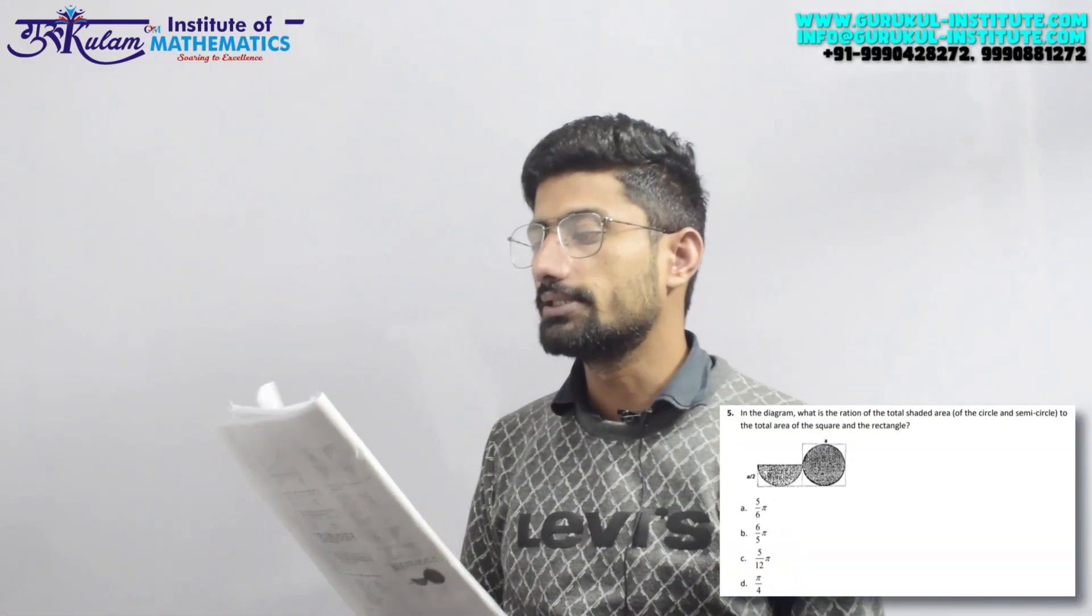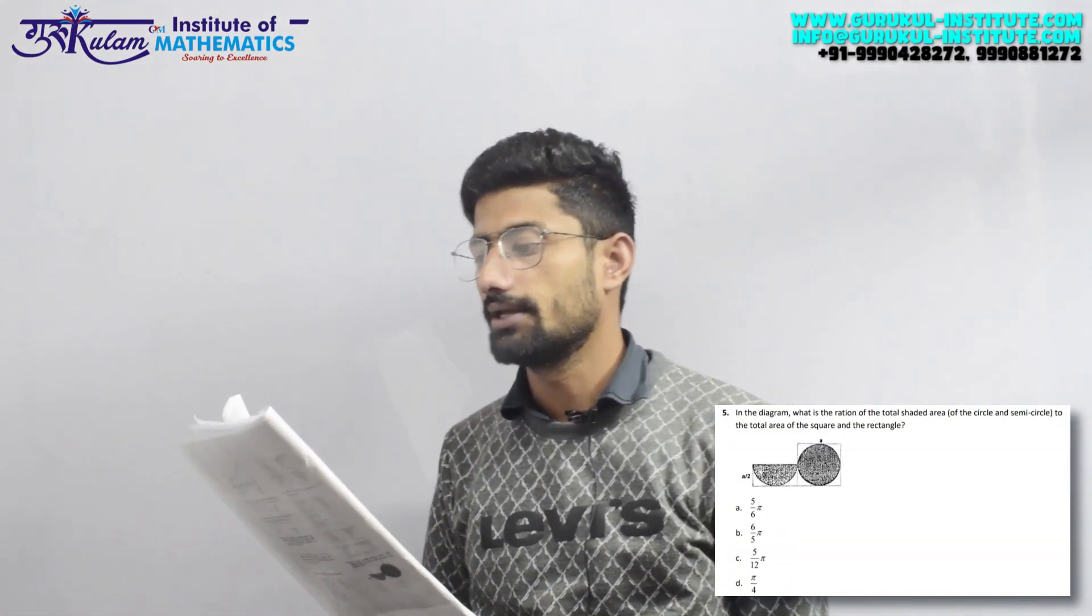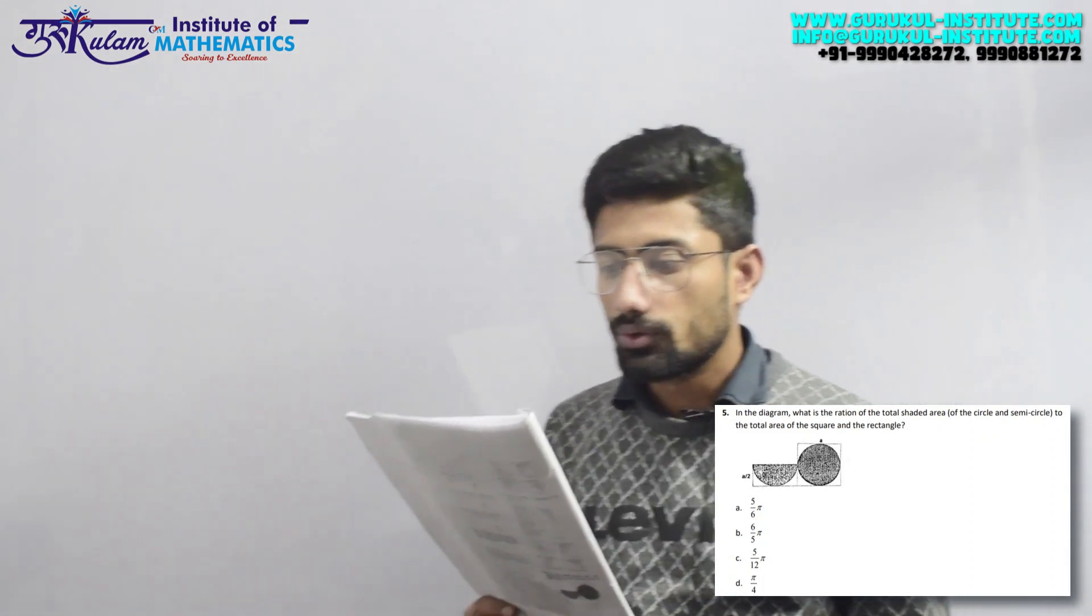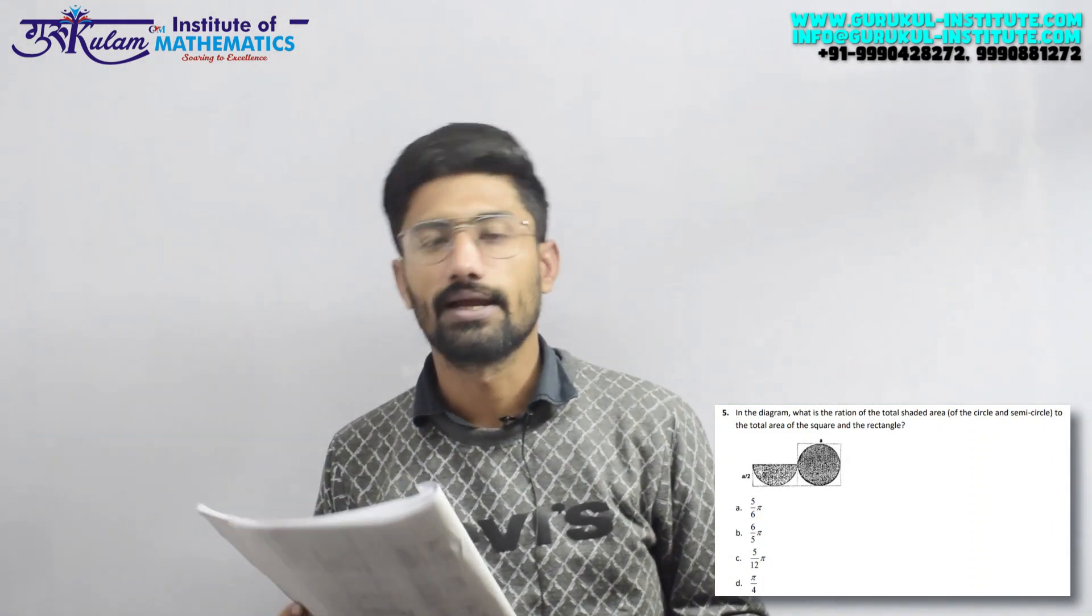In the diagram, what is the ratio of the total shaded area of the circle and semicircle to the total area of the square and the rectangle?